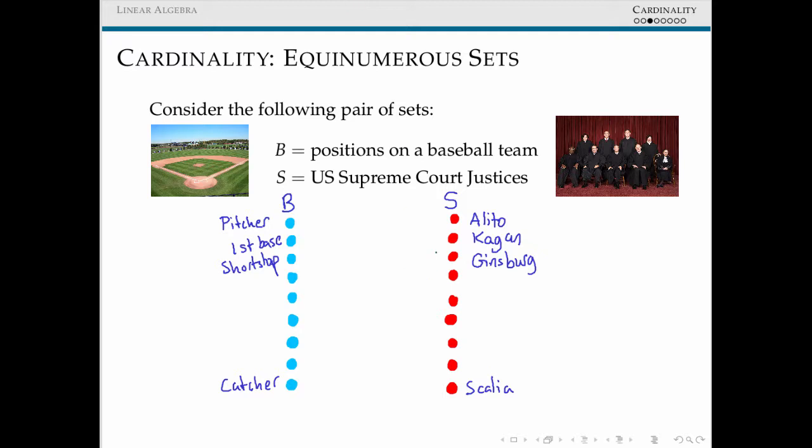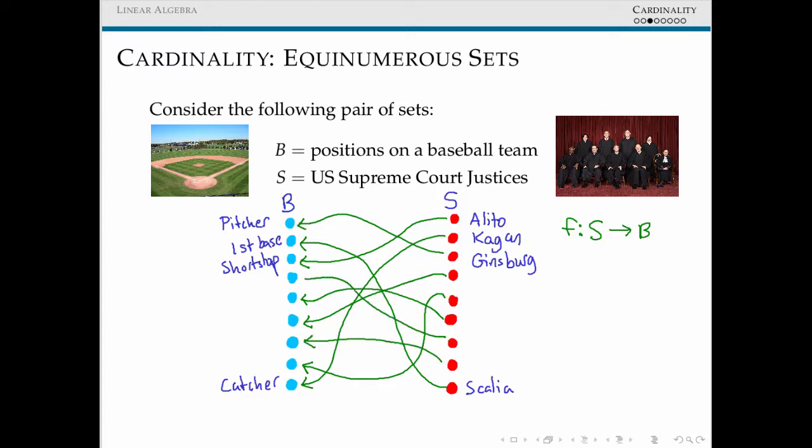Our proof that the number of Supreme Court Justices is the exact same as the number of baseball positions is we just assign them each position to play. So we set up maybe an inter-federal court league where each of our Supreme Court Justices will take one of these positions. You notice the way I'm drawing this, we're actually constructing a map from Supreme Court Justices to baseball positions we're going to have them play. So this is actually a proof that B and S are equinumerous.